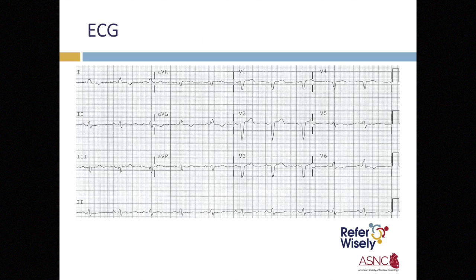The electrocardiogram obtained at the current office visit demonstrates sinus rhythm with left bundle branch block. As noted previously, the electrocardiogram from the patient's checkup last year did not show left bundle branch block. Therefore, the left bundle branch block should be considered new onset, which raises the question: what further diagnostic studies should be performed to evaluate this conduction abnormality?